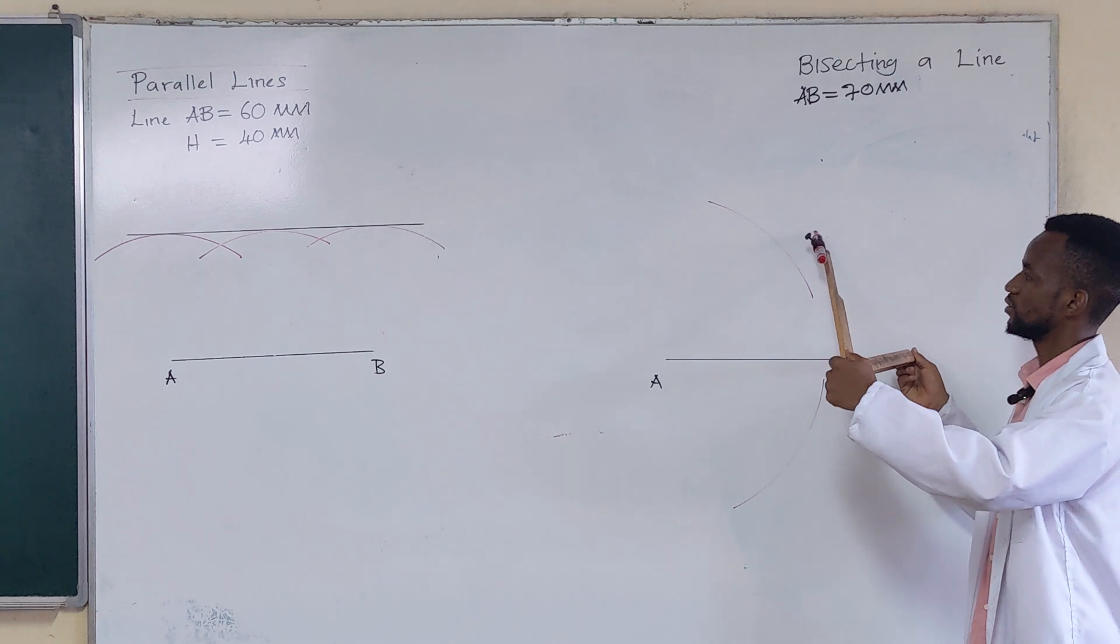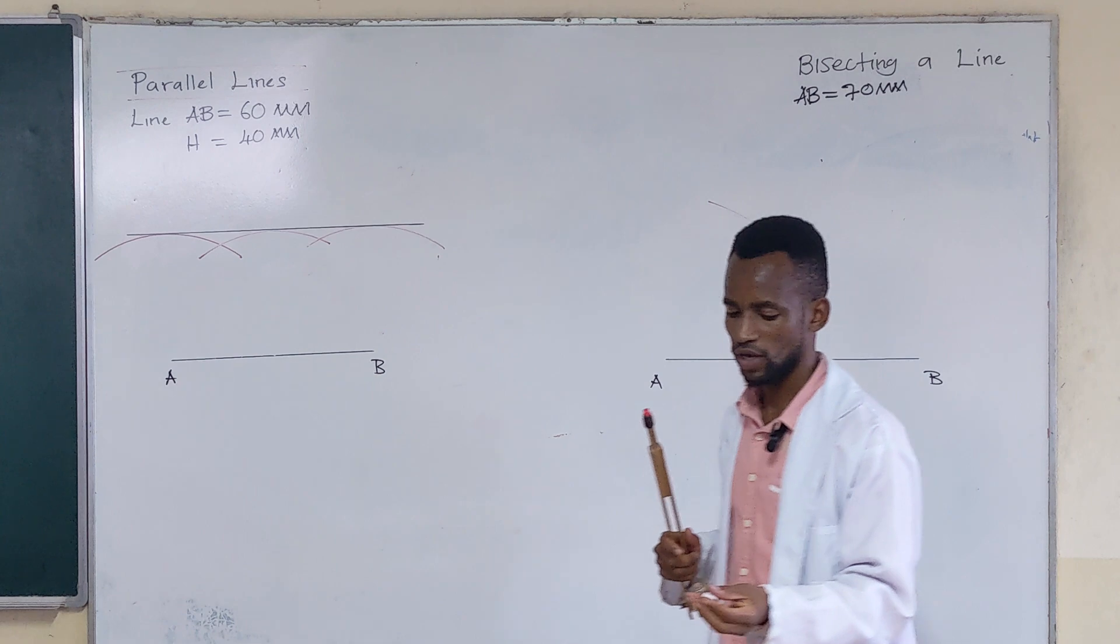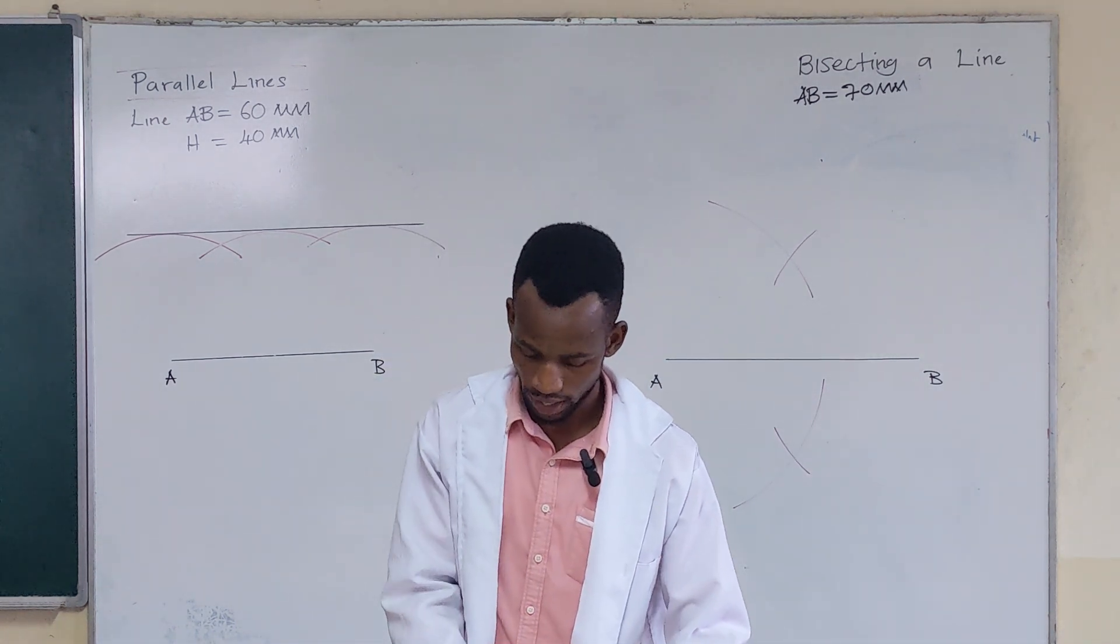You strike an arc, you strike another arc like that. Where the arcs are meeting, those are the points that you want to join with a straight line.